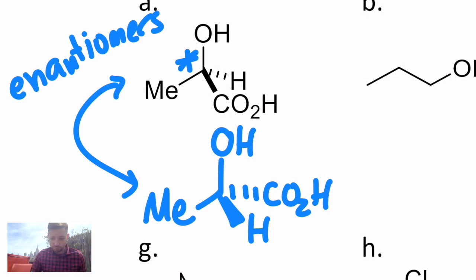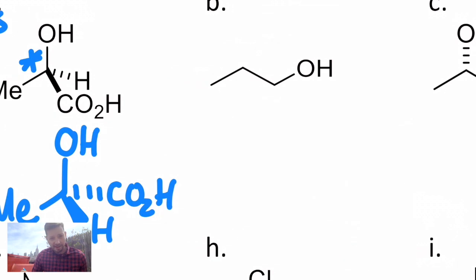Right next to it, molecule B, this is propanol. This does not have any asymmetric carbons. Every carbon has at least two of the same atom attached to it. There's two hydrogens right there, there's two hydrogens on that carbon, there's actually three hydrogens on that carbon, so no asymmetric carbons, and it's also just an achiral molecule overall.